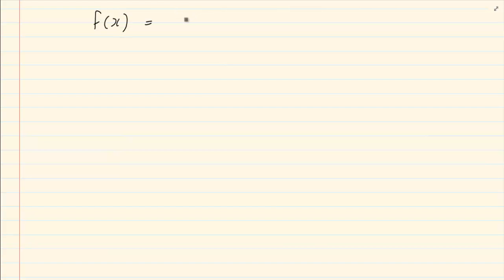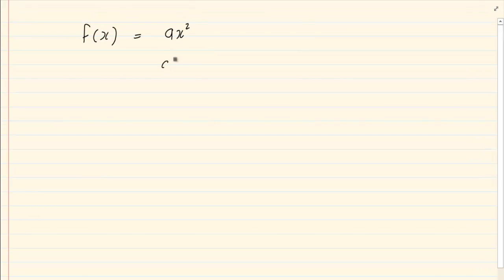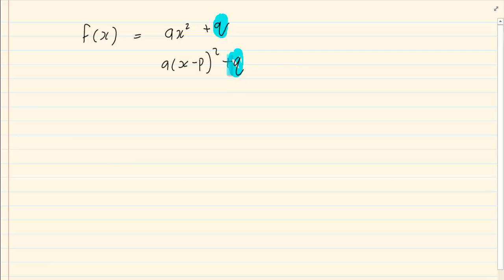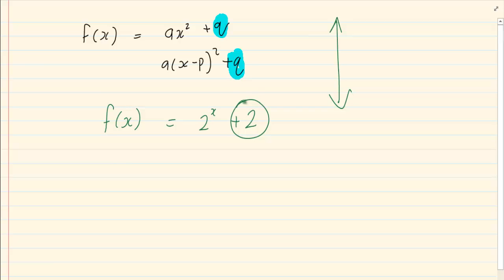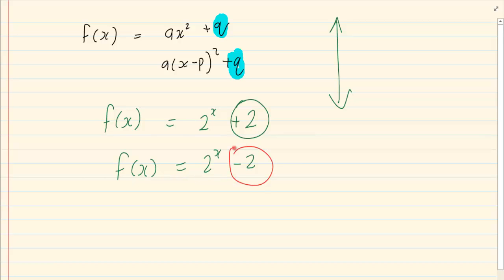From your previous work in Grade 11, you know that when we have an equation — whether it's ax squared, whether it's a parabola ax minus p all squared plus q, or whether it was an exponential graph — the q always moved our graph up or down. For example, f(x) = 2 to the power of x plus 2 means the graph moved up by 2. If it's 2 to the power of x minus 2, then the graph went down by 2. So the effect of q always moved the graph up or down.